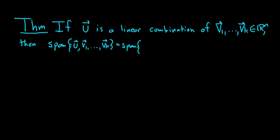Intuitively, the span of a set of vectors is the set of all linear combinations of those vectors. So what we're saying here is that if u is in the span, you can just drop it, because u is a linear combination of the other vectors — you can simply remove it. It's called a redundant vector. So let's look at a couple of corollaries of this theorem.